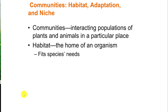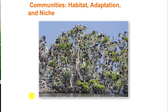Thinking about habitat adaptations and niches: communities are interacting populations of plants and animals that occur in a particular place. The habitat is the home of an organism. While the community is the collective interactions, the habitat is the actual home and must fit a species' needs. We'll be looking at maps of land cover change, different habitats, and deforestation. The habitat includes trees, water, sunlight — all the resources supporting this colony of seabirds shown here.